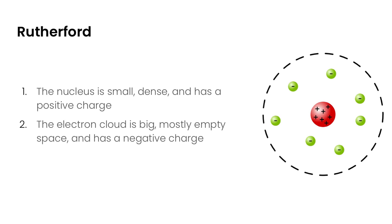Rutherford's model, summarizing what he found with his gold foil experiment, is he came up with the idea of a nucleus. The nucleus is small, dense, and has a positive charge. The electrons occupy the space around the nucleus. The electron cloud itself is big, it's mostly empty space, and it has a negative charge.